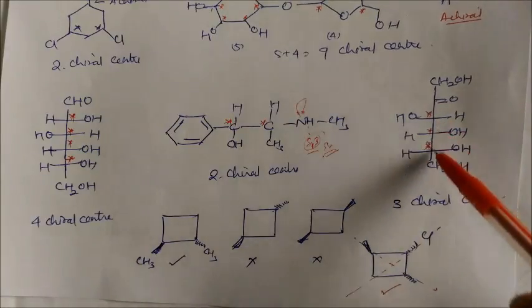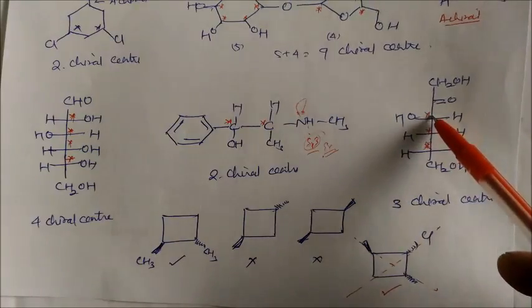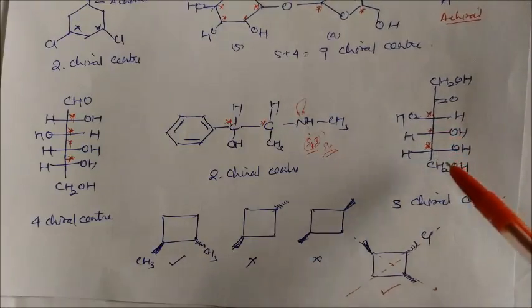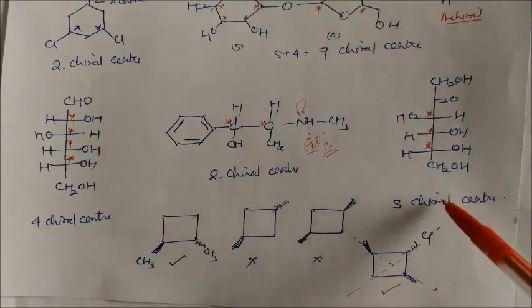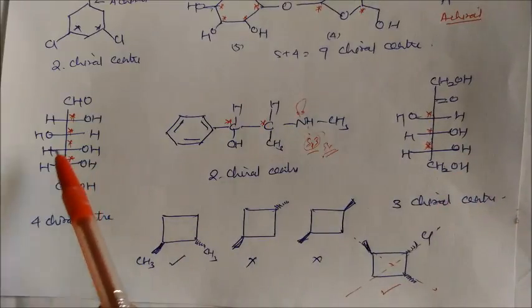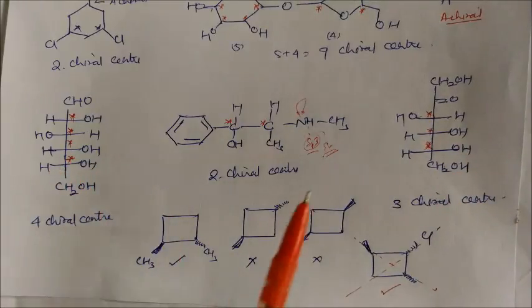Let us see this case — this is a fructose molecule. In fructose, there are three chiral centers: one here, one here, and one here. So in fructose there are three chiral centers, and in glucose we have four chiral centers.